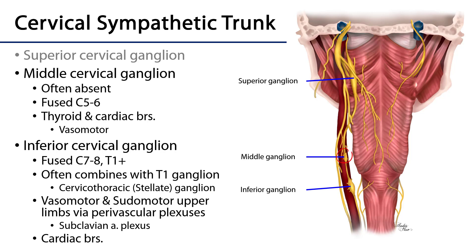The middle cervical ganglion is the smallest of the three and may be absent. It represents the fused ganglia of spinal levels C5 through C6 and provides branches to the thyroid gland and the cardiac plexus — predominantly vasomotor fibers. The inferior ganglion is variable in size, representing the fused ganglia of C7 and C8, but may also include T1. When it includes T1, it is quite large and is referred to as the cervicothoracic or stellate ganglion. It supplies both vasomotor and sudomotor fibers via the subclavian plexus to the upper limb, and also provides vasomotor fibers to the cardiac plexus.